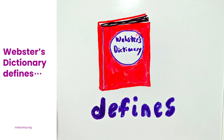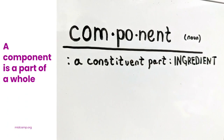Webster's Dictionary defines component as a constituent part or ingredient. This is a very general definition, as lots of things are parts of a larger whole, so we must mean something more specific when it comes to web work — or do we?